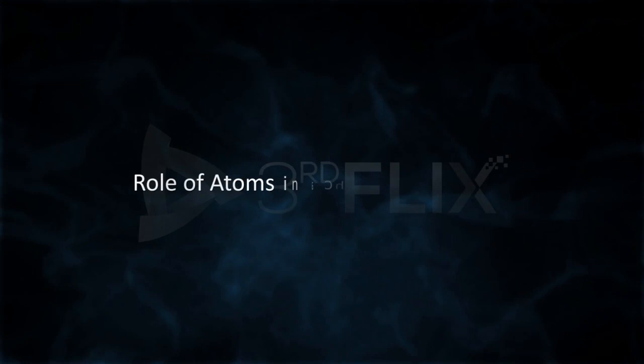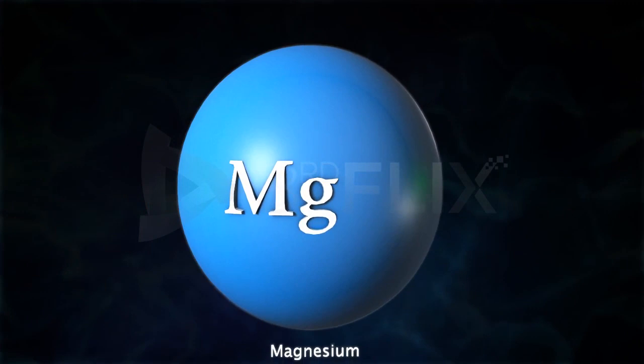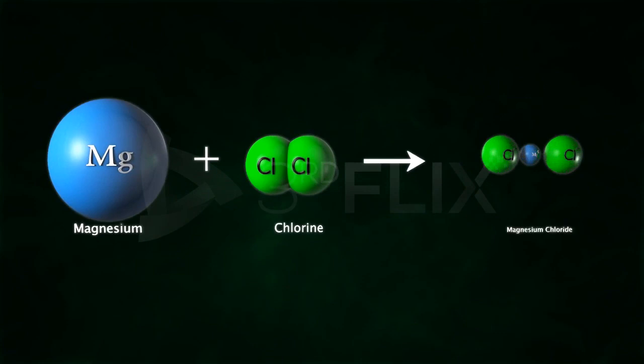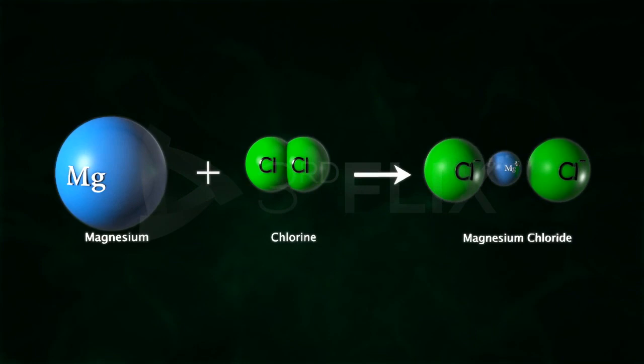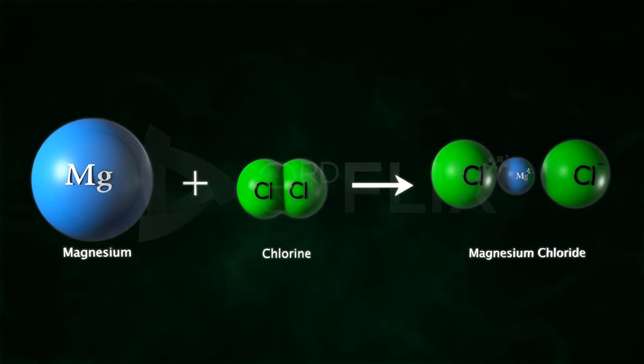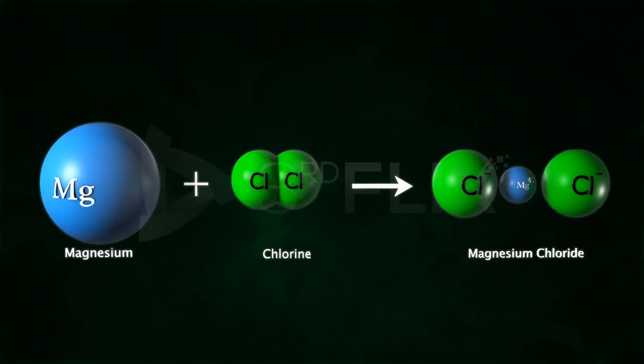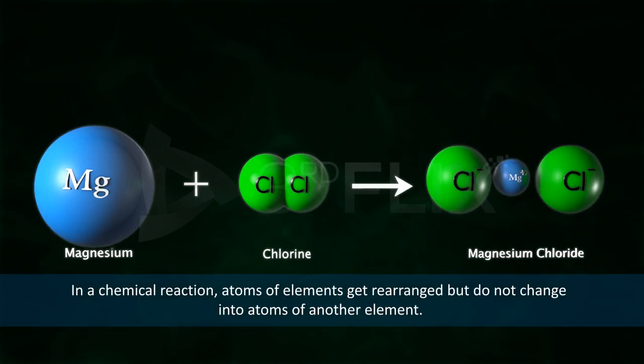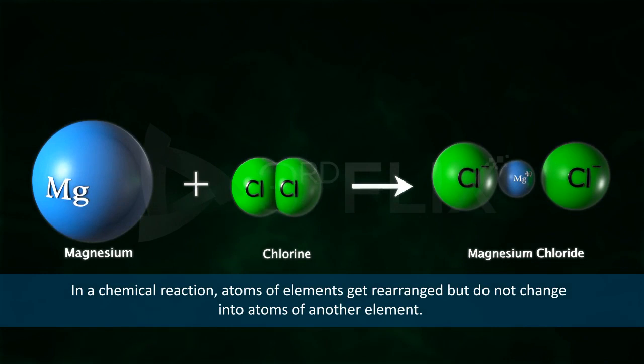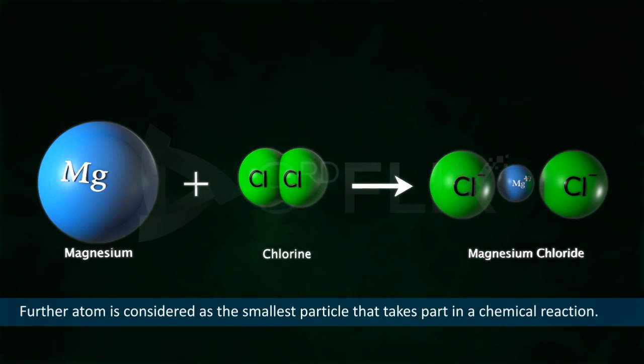Role of atoms in a chemical reaction. When two elements such as magnesium and chlorine react, the product formed is magnesium chloride. No new atoms are formed in the product other than magnesium and chlorine. Even though there is a change in the arrangement of atoms in the product, magnesium chloride is made up of the atoms of the reactants — magnesium and chlorine — and no other. Dalton suggested that in a chemical reaction, atoms of an element get rearranged but do not change into atoms of another element. The atom is also considered the smallest particle that takes part in a chemical reaction.